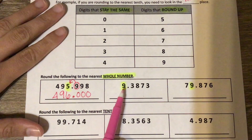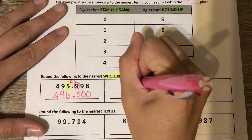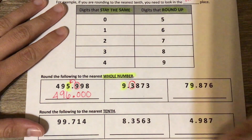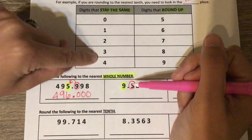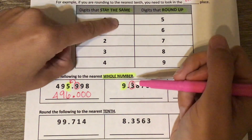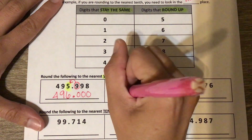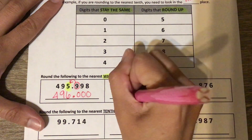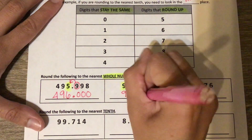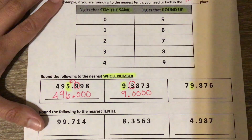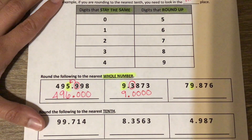The next one: we already highlighted the nine in the ones place. I'm going to circle the digit to the right. Three falls in the 0–4 category, so it stays the same. My nine is going to stay nine. Everything to the right becomes a zero — or again, you could just write it as nine.